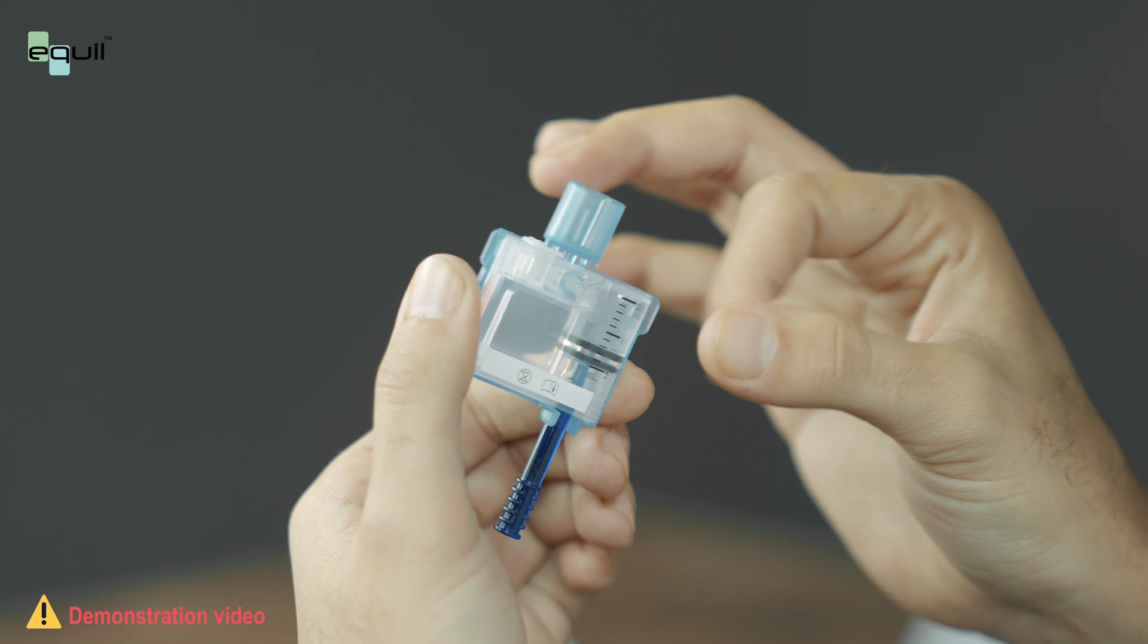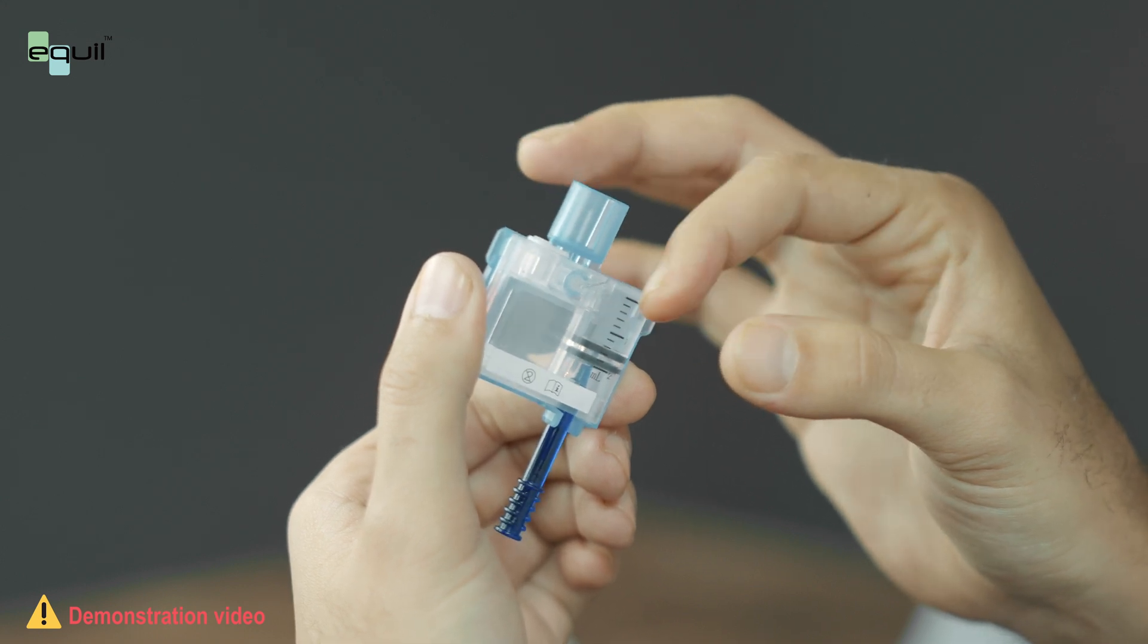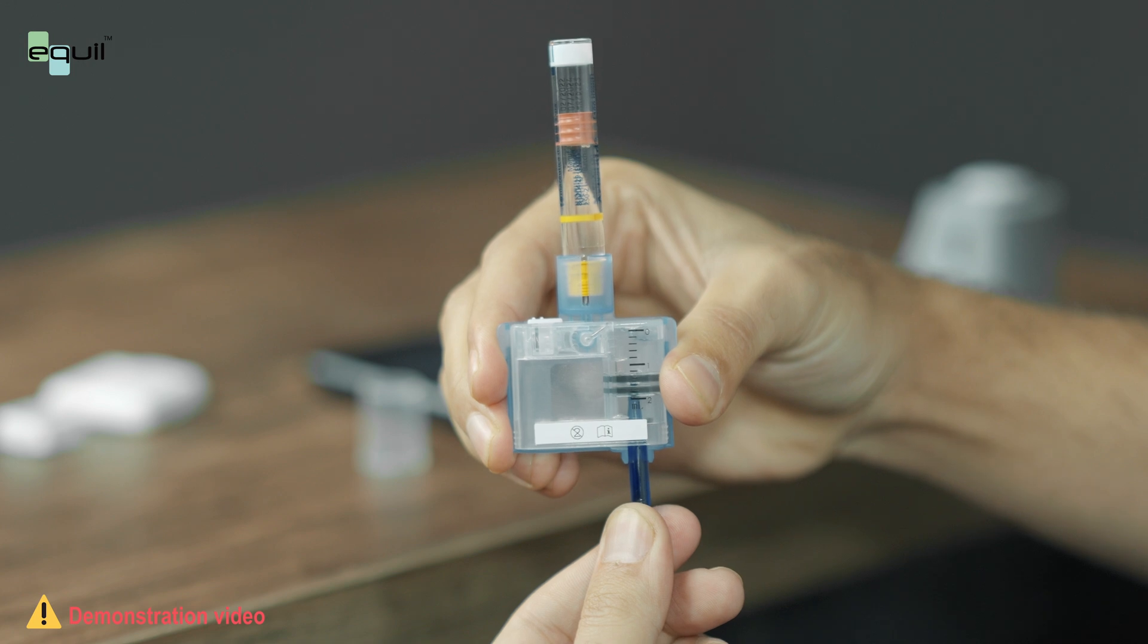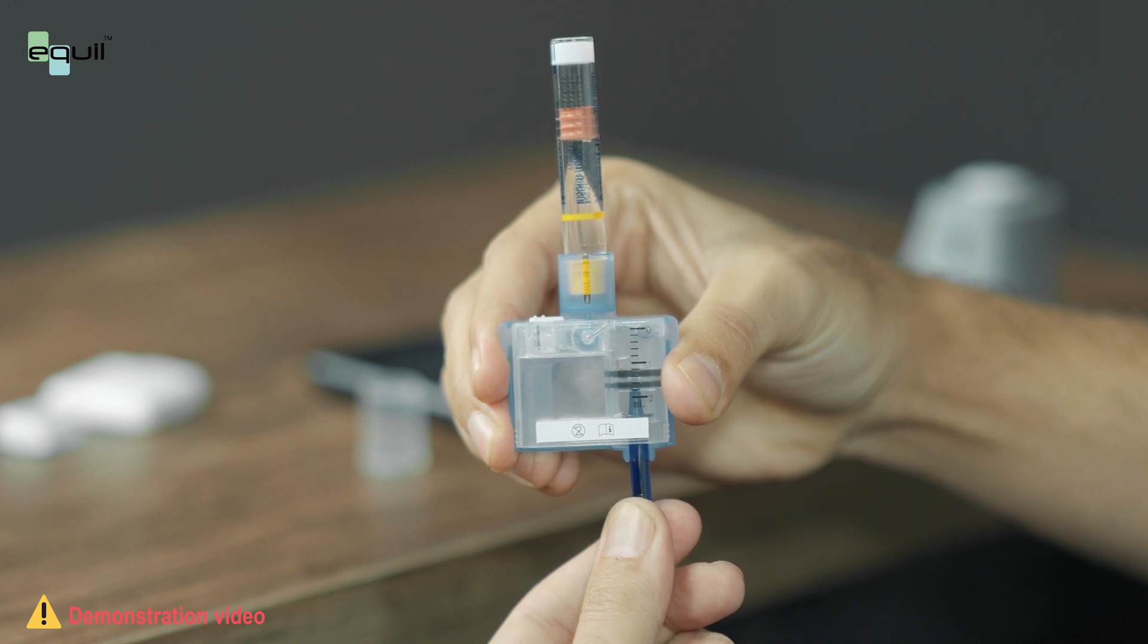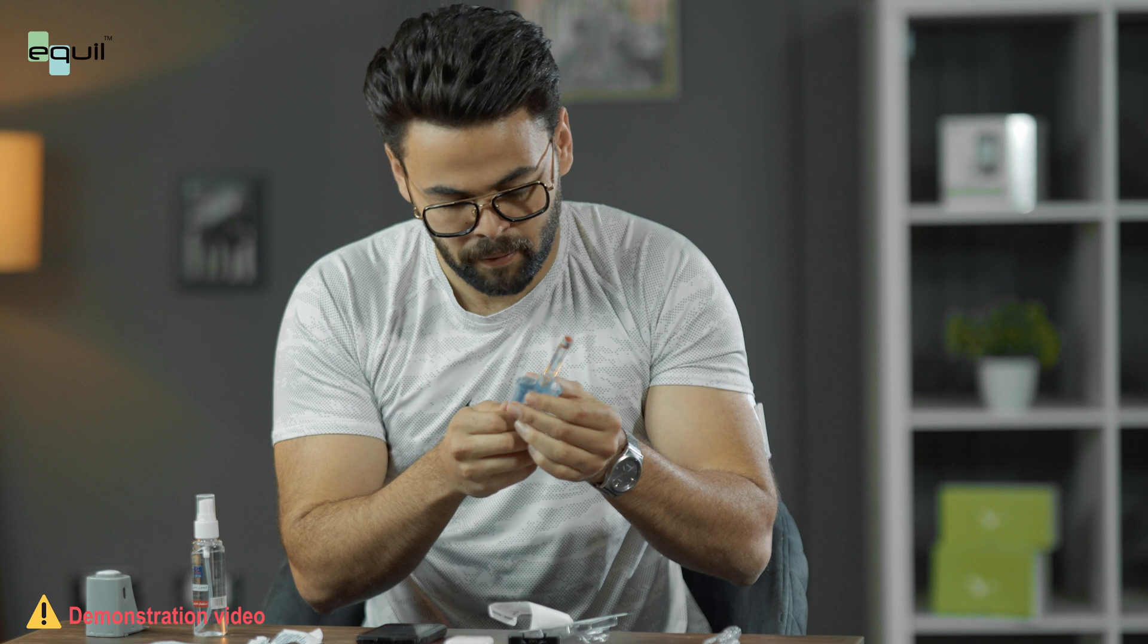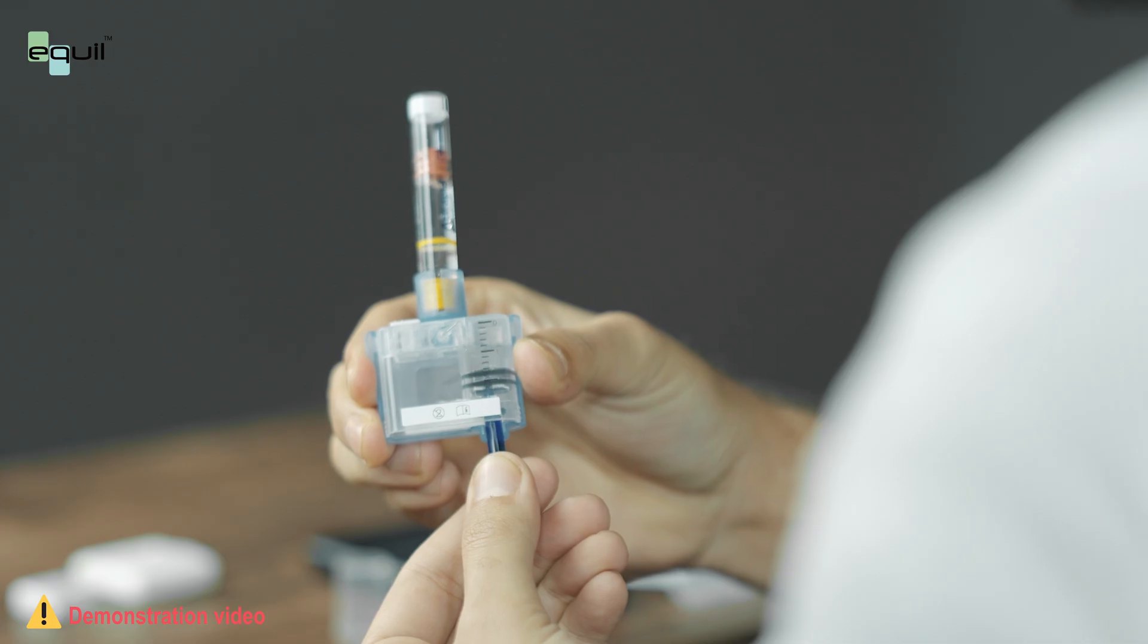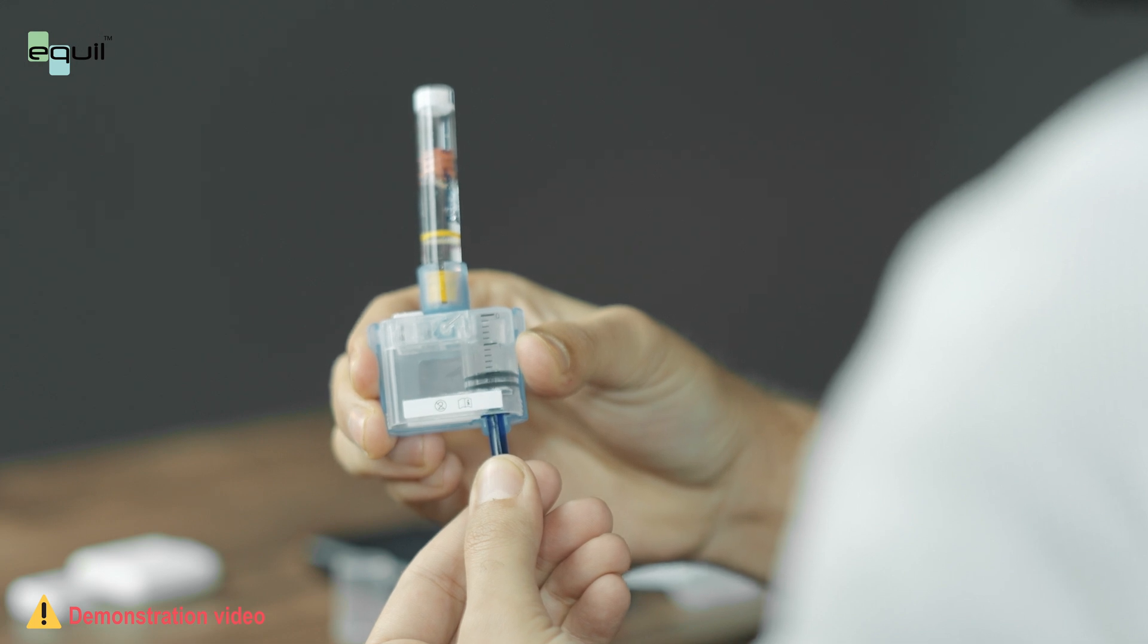Gently tap the side of the reservoir to encourage any air bubbles to move to the top of the reservoir. Push the pull rod slowly to eject the bubbles back into the cartridge. And then slowly pull to draw more insulin into the reservoir. Repeat until the reservoir has enough insulin and there are no visible air bubbles.